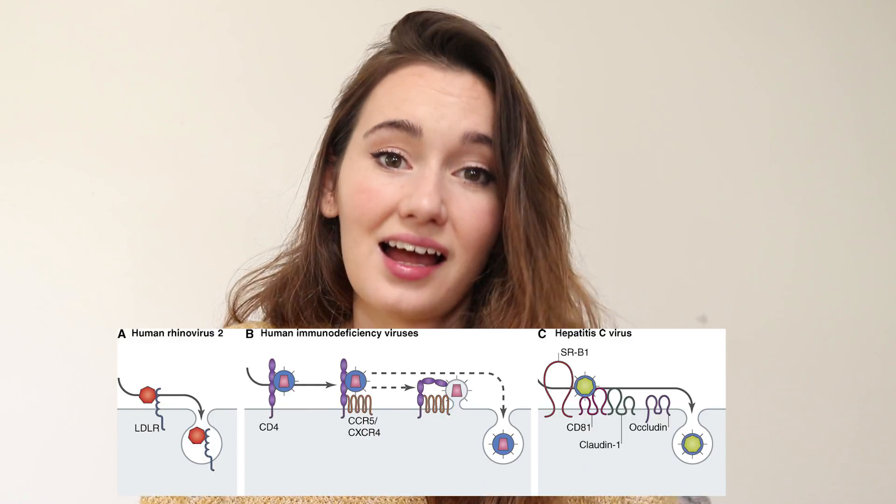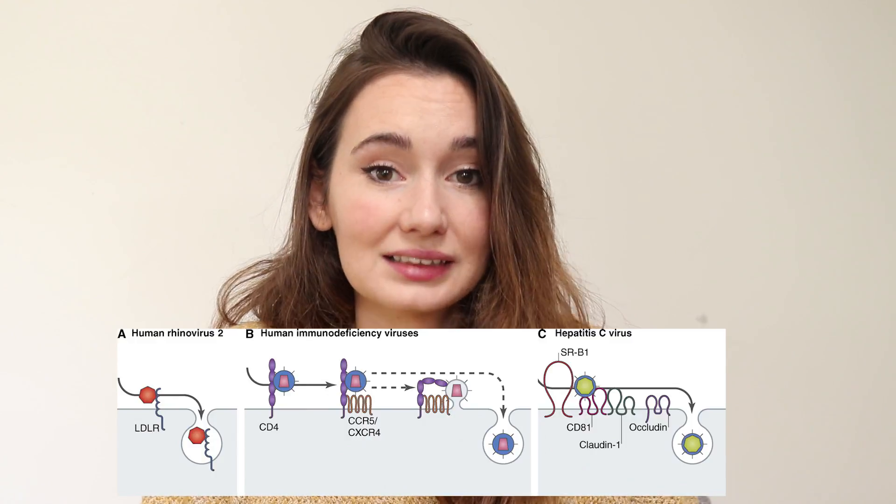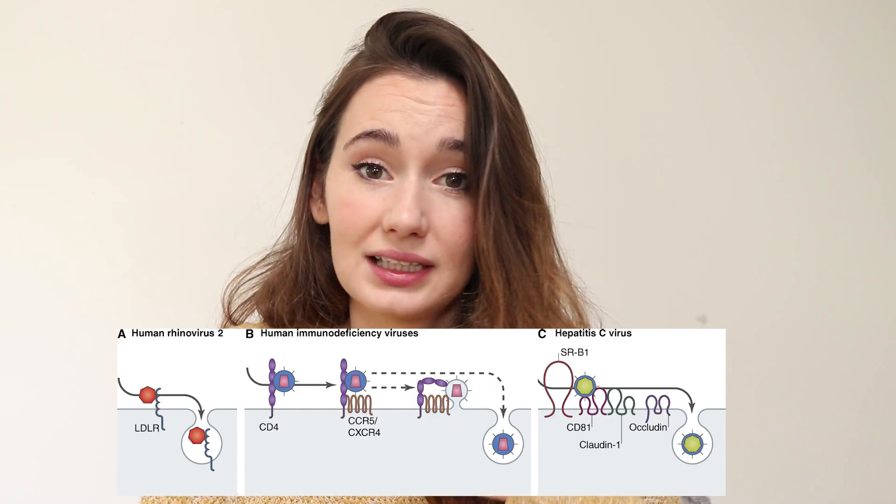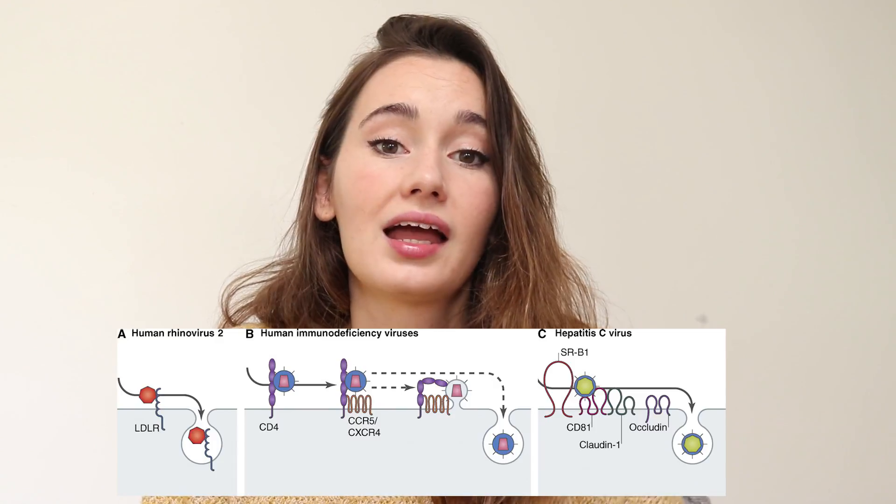Once getting into the body via wounds or respiratory passages, viruses attach to a host cell. The virus then transduces its genome into the host cell — it injects it into the cell — and this can happen in a few different ways. Some viruses such as HIV, which has an envelope, fuse with the host cell membrane. Another envelope virus, the influenza virus, is engulfed by the cell. Some non-envelope viruses such as the polio virus create a porous channel of entry and burrow through the membrane.